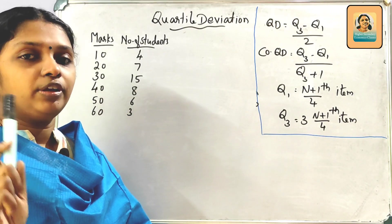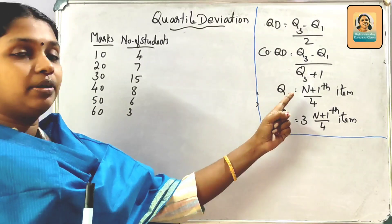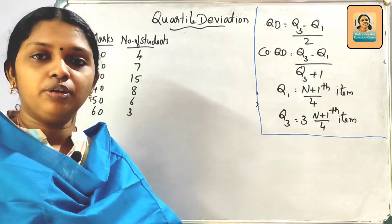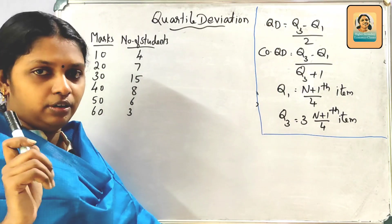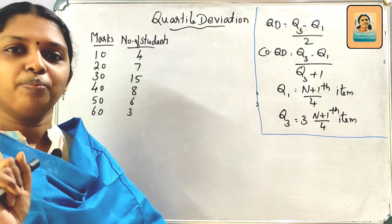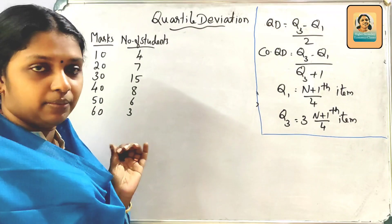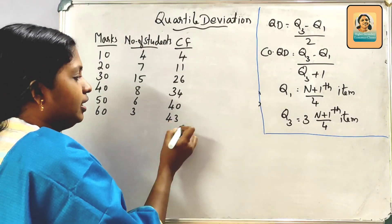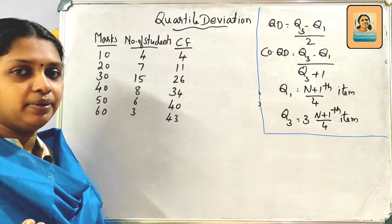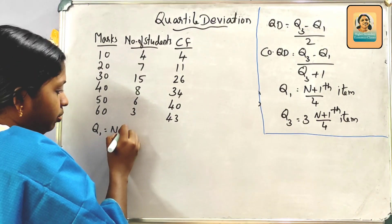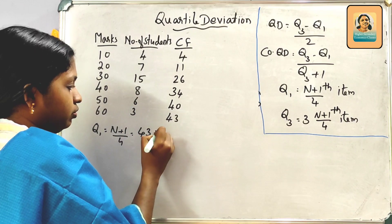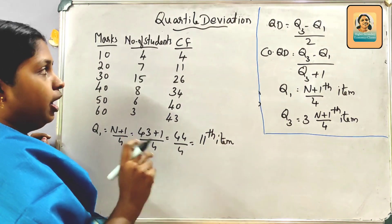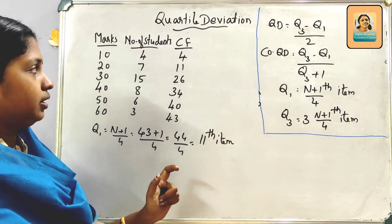This time, we look at one fix for the number of frequencies — the cumulative frequency. Make sure that N is the total of all frequencies. Q1 = (n+1)/4 = (43+1)/4 = 44/4 = 11th item. So now we are going to look at the 11th item.